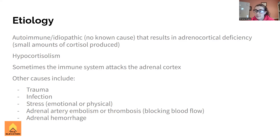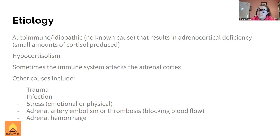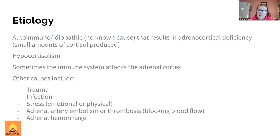Sometimes the immune system ends up attacking the adrenal cortex. If it is an autoimmune component, understand it's because the adrenal cortex produces cortisol - that's where the problem is. Other causes of Addison's disease could be trauma to the adrenal glands, destruction of the adrenal glands, infection, or any sort of stress. It could be emotional stress - your job, a bad breakup, grieving a loss - some sort of emotional stressor can definitely cause problems with cortisol production, and sometimes it can go lower with Addison's disease.